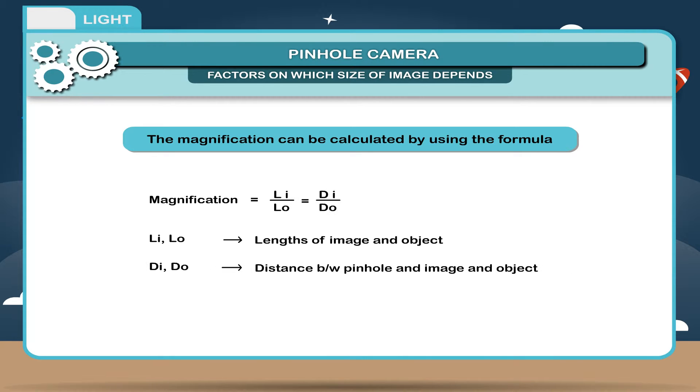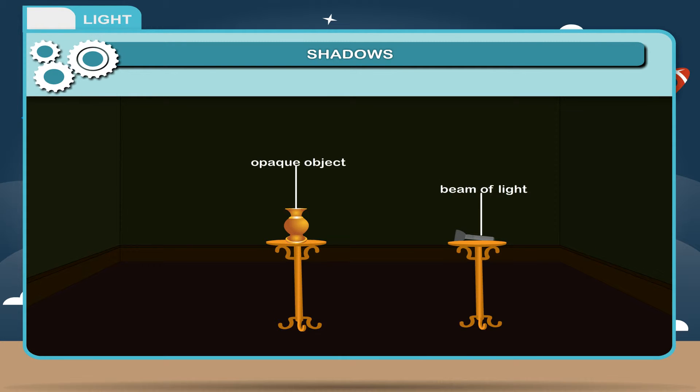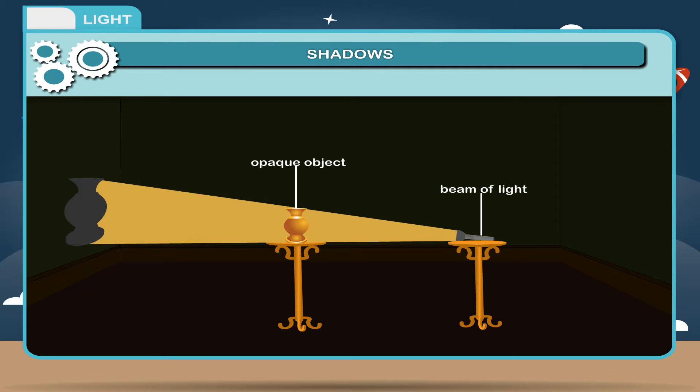Shadows. When a beam of light shines on an opaque object, the light rays which reach the object are stopped while those rays which pass by the edges continue on their path. A region without light forms behind the object is called a shadow. The object blocks the light so the shadow is dark.